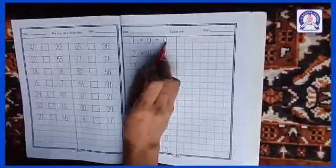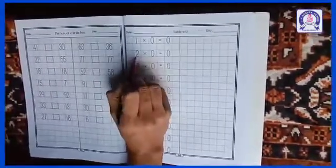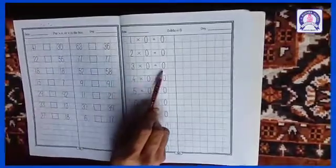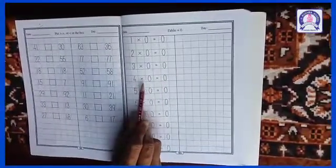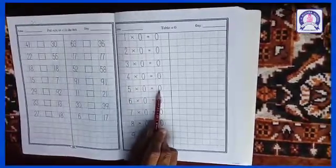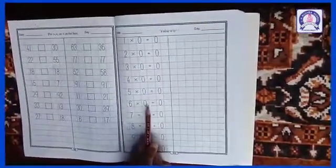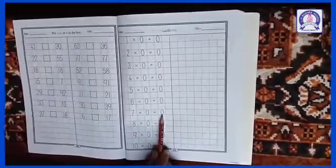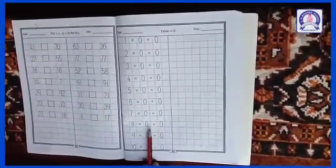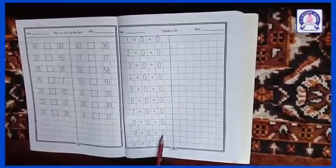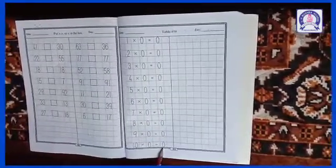One times zero equals zero, two times zero equals zero, three times zero equals zero, four times zero equals zero, five times zero equals zero, six times zero equals zero, seven times zero equals zero, eight times zero equals zero, nine times zero equals zero, ten times zero equals zero.